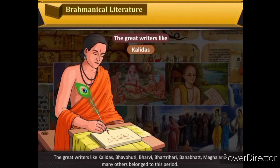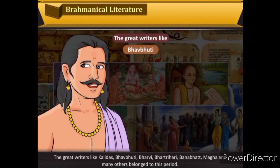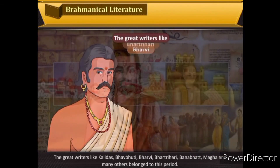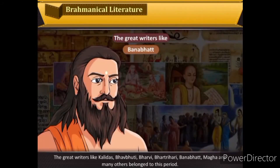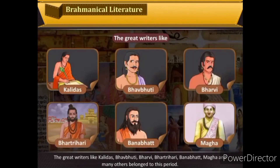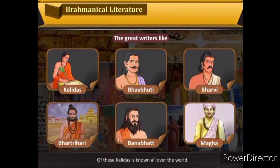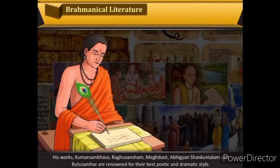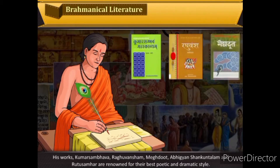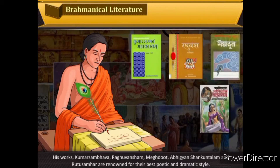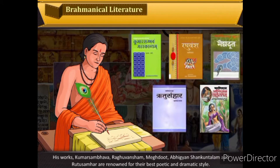Great writers like Kalidasa, Bhavbhuti, Bharavi, Bhartihari, Bhanabhatta, Magha and many others belonged to this period. Of these, Kalidasa is known all over the world. His works — Kumarasambhava, Raghuvansha, Meghaduta, Abhijnanashakuntalam, and Ritusamhara — are renowned for their best poetic and dramatic style.